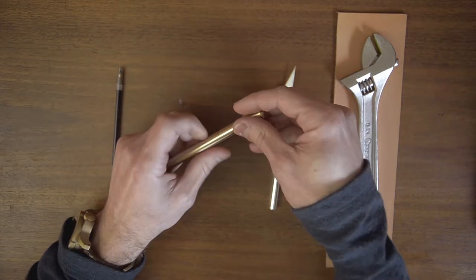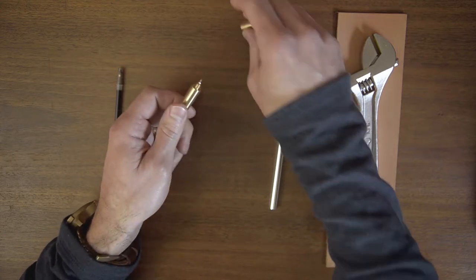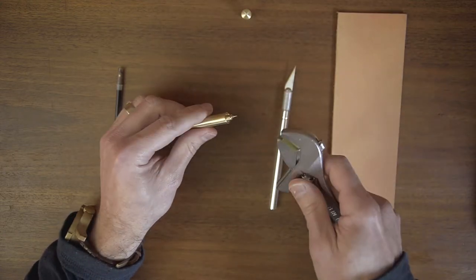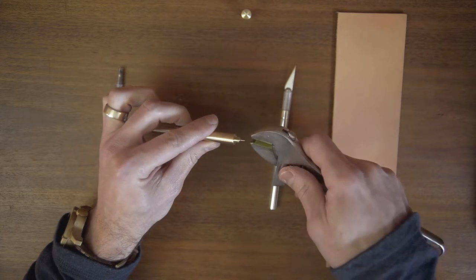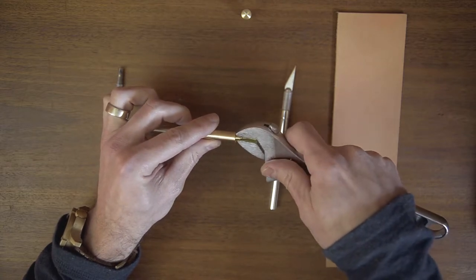First we are going to take our pen and remove the cap and use the adjustable wrench to clamp down on the flats of the threaded insert.